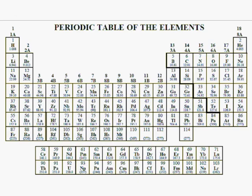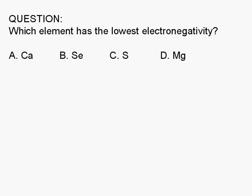Let's find the elements given. Calcium is element 20, selenium is element 34, sulfur is element 16, and magnesium is element 12. The one furthest down and to the left is calcium. So the correct answer is A.